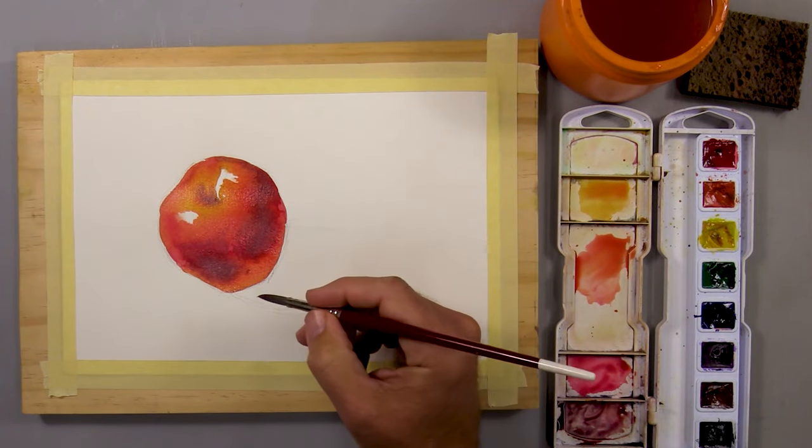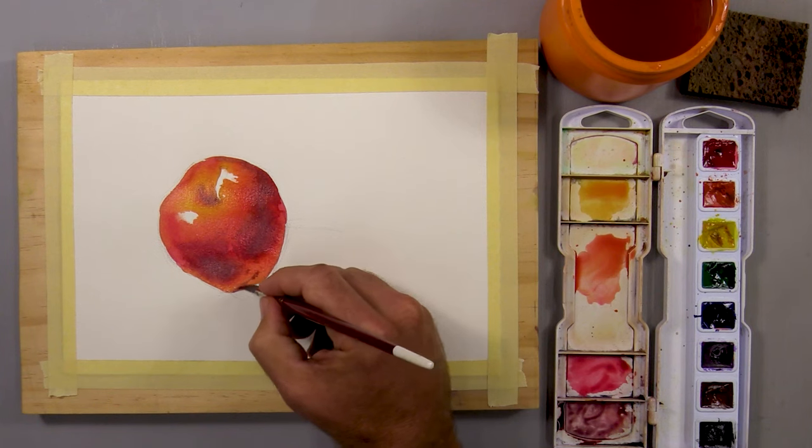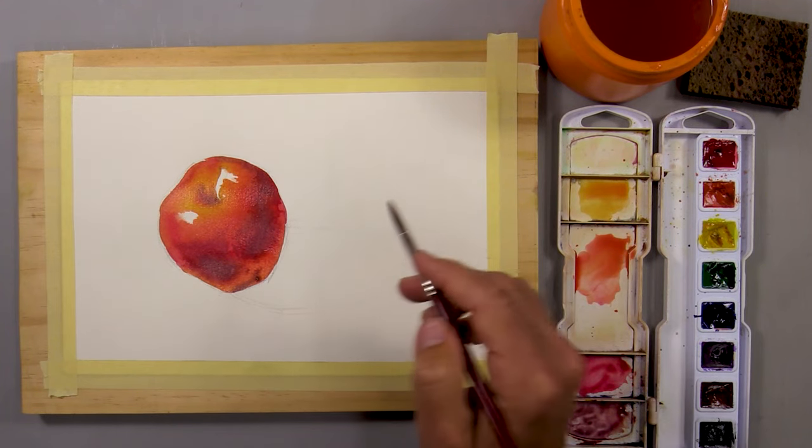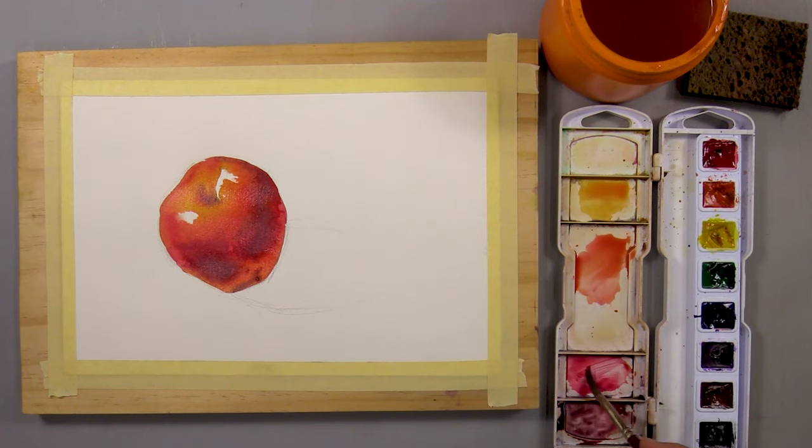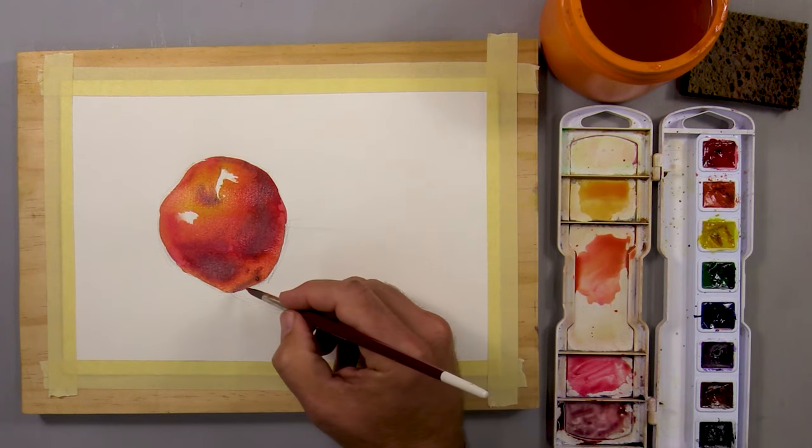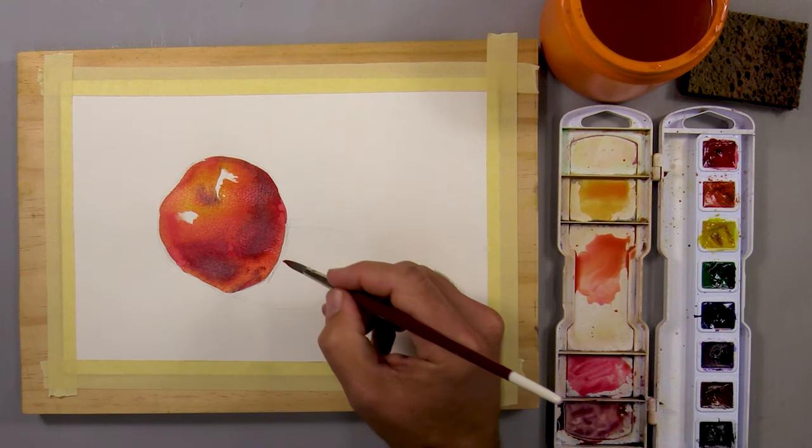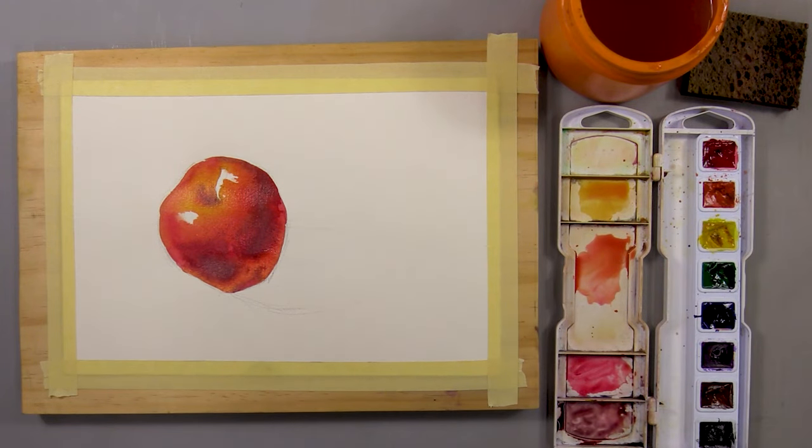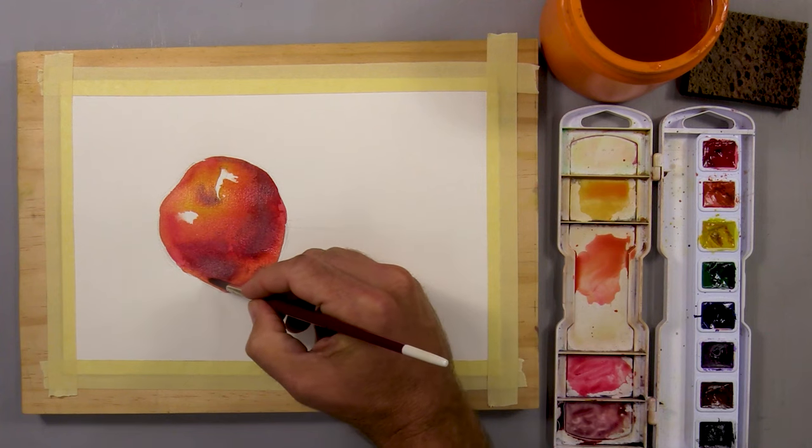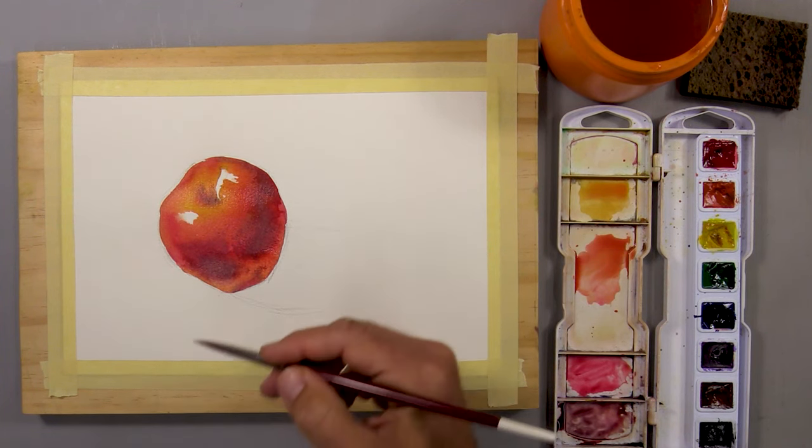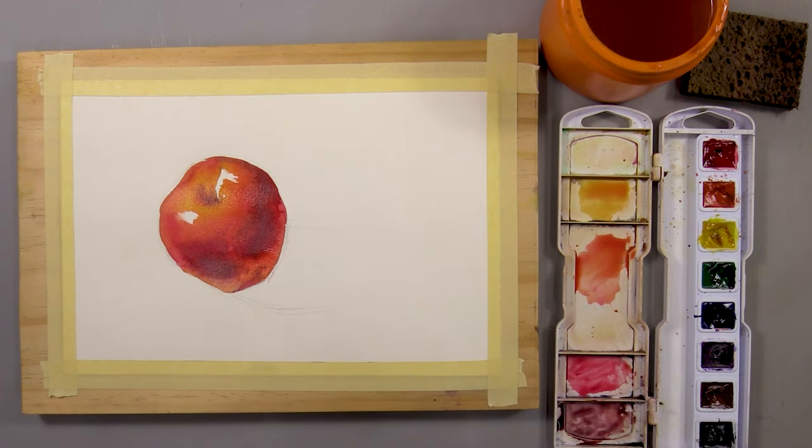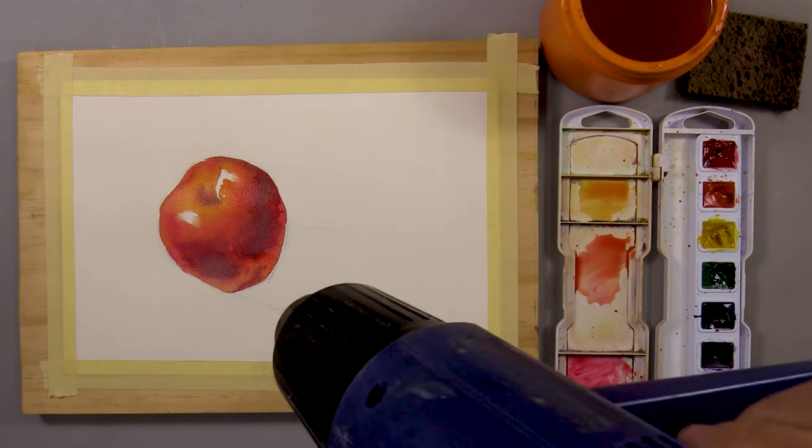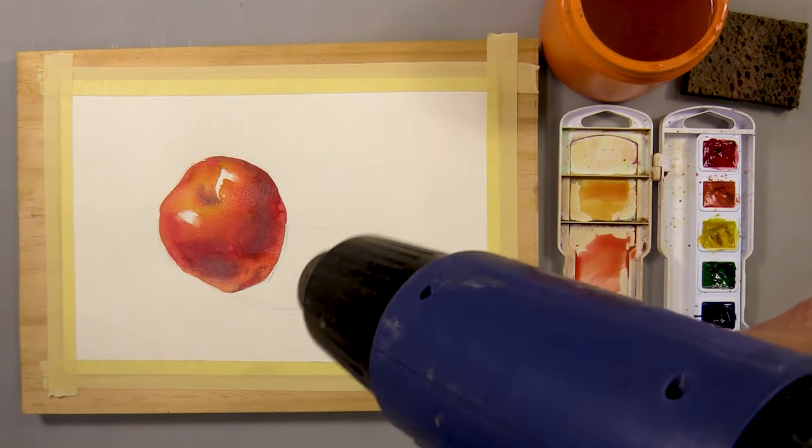While this paint is still wet, you can really take some time to add in colors where you think you need them. Now I notice some reflected light toward the bottom of the apple as well. For that, I use a lift out technique where I dry off my brush and soak up some of that value like a sponge. Now that I've adjusted all the values on the apple the way I want them, I'm going to dry it off with my heat gun.